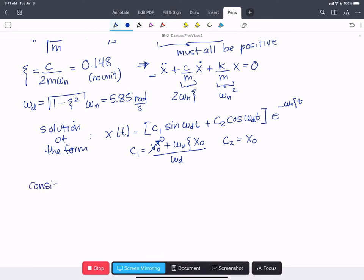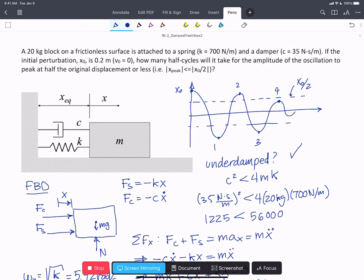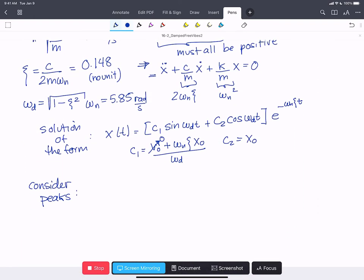Now we want to consider the peaks. We want to consider the peaks because we've been asked to find a peak that's less than half the initial displacement. So if we look up here, the distance between two peaks is going to be tau over 2. So we can write tau over 2 is pi over omega d, the damped natural frequency.